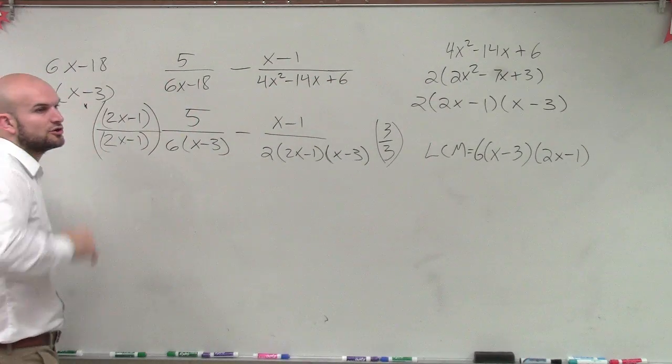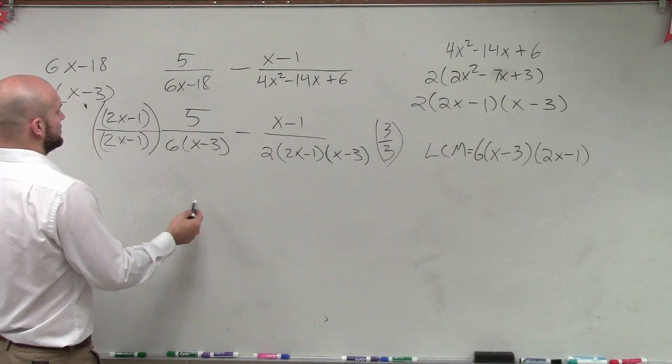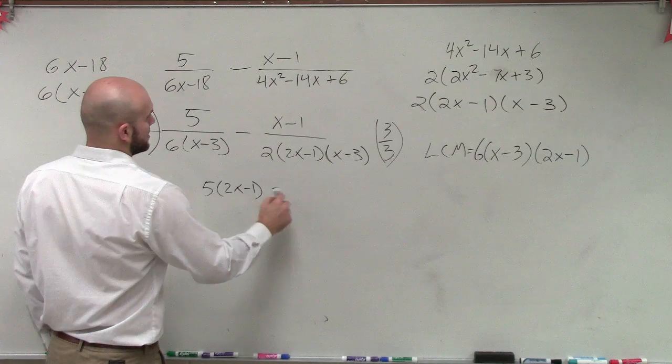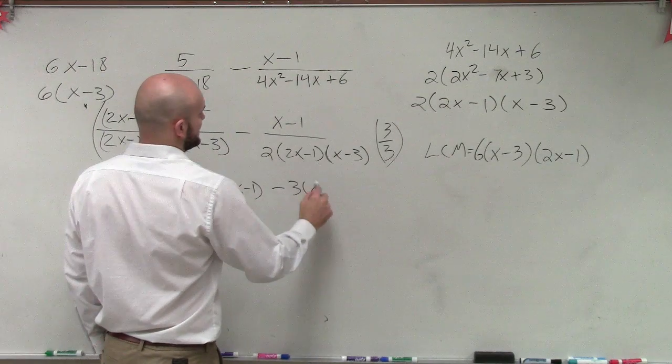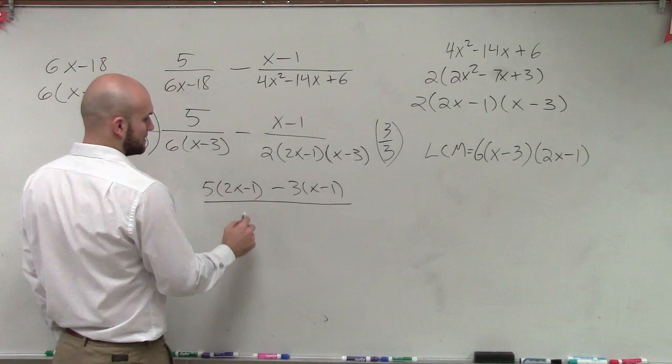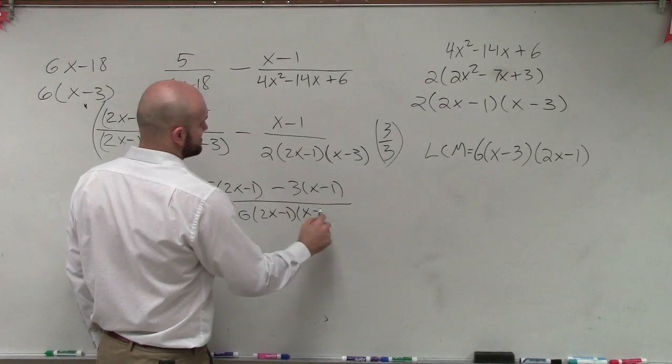So now let's simplify our numerator, and then our denominator is going to be our least common multiple. So therefore we'll have 5 times 2x minus 1 minus 3 times x minus 1 divided by 6 times 2x minus 1 times x minus 3.